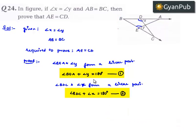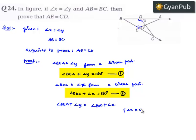Now, as the right-hand side of both equations is equal, we can equate the left-hand sides: angle BEA plus angle y is equal to angle BDC plus angle x. But it is given that angle x is equal to angle y. Therefore, we can say angle BEA is equal to angle BDC.